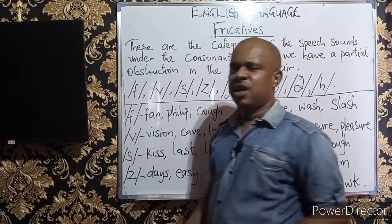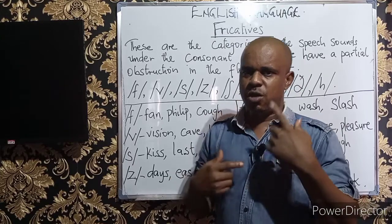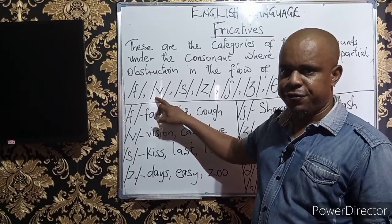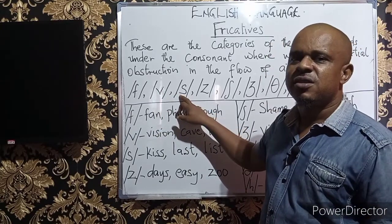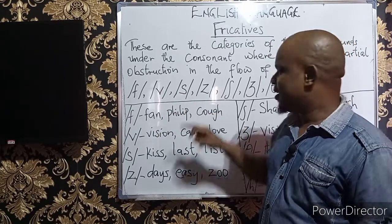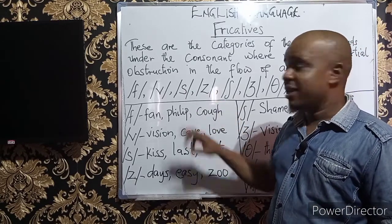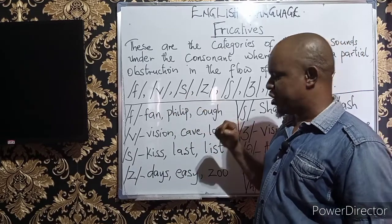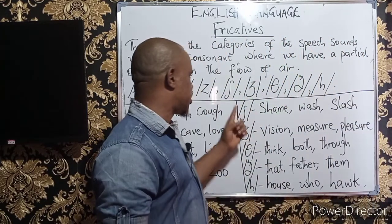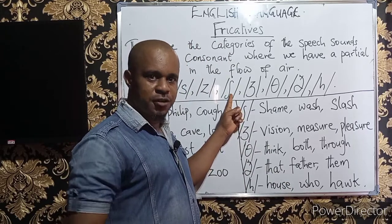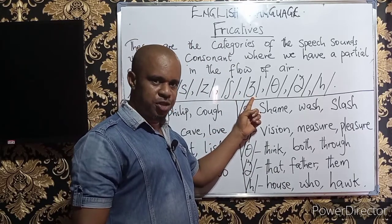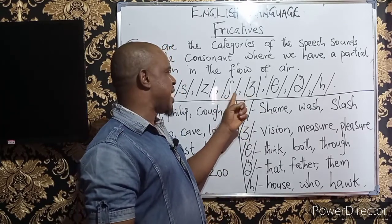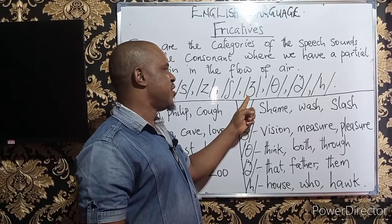If you demonstrate the voiced version, you observe the vibration noticed in your vocal cord. So this is the same pattern of articulation, but one is voiceless and one is voiced. The third pair is also voiceless and voiced — the same pattern of articulation, but the difference is that one is voiceless and the other is voiced.